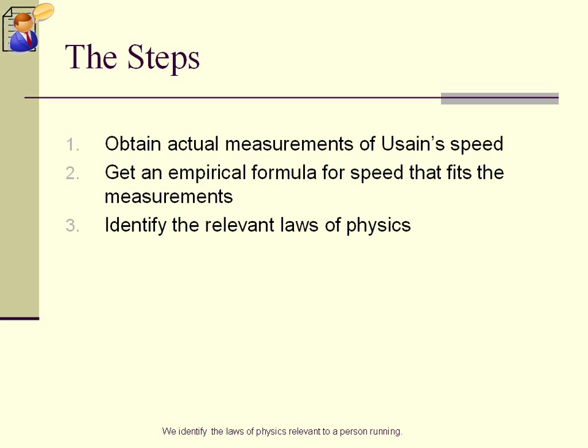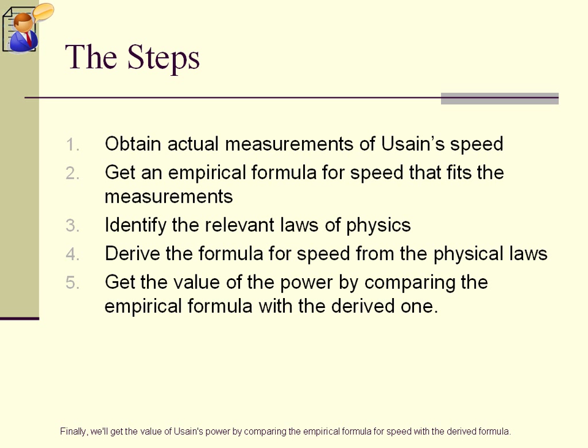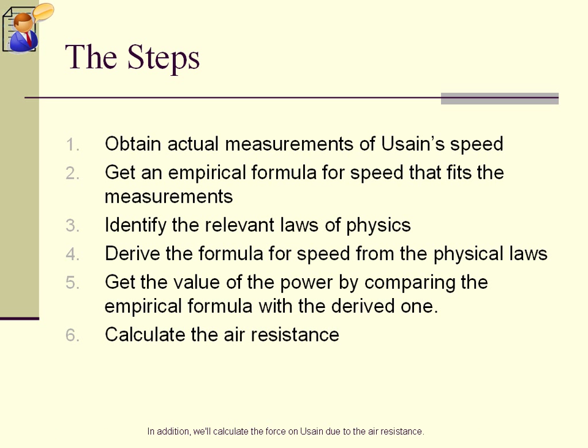We'll construct an empirical formula for Usain's speed by fitting a curve to the actual data. We identify the laws of physics relevant to a person running. Then, we'll derive the formula for speed from the physical laws. Finally, we'll get the value of Usain's power by comparing the empirical formula for speed with the derived formula. In addition, we'll calculate the force on Usain due to the air resistance.